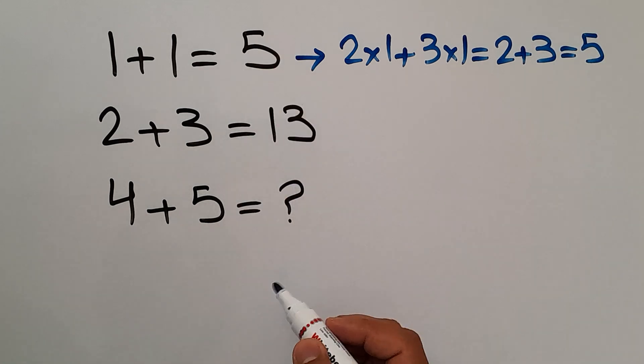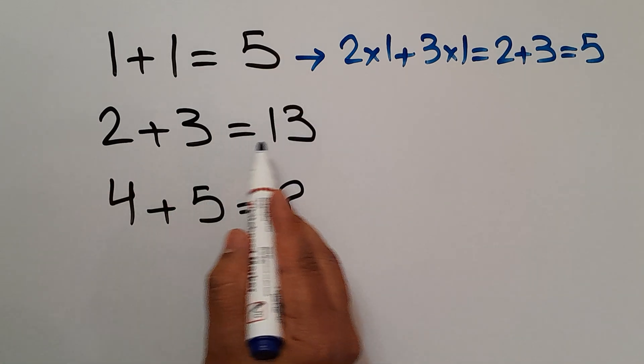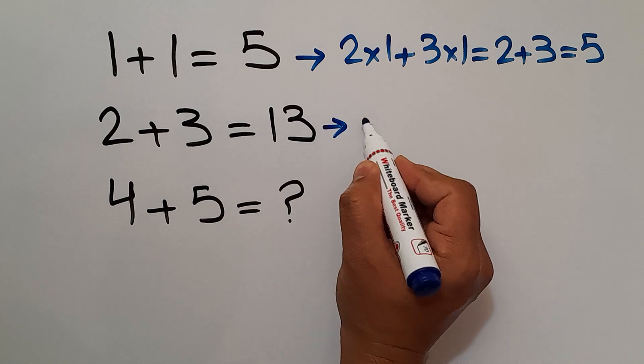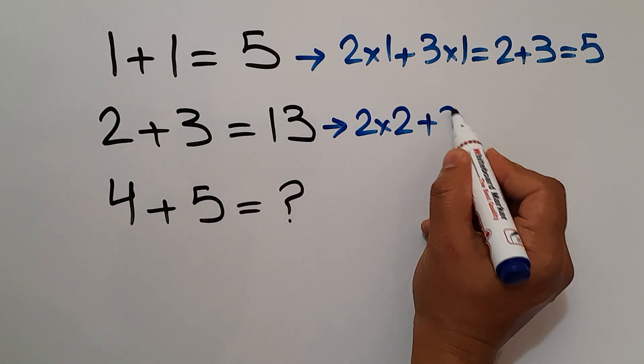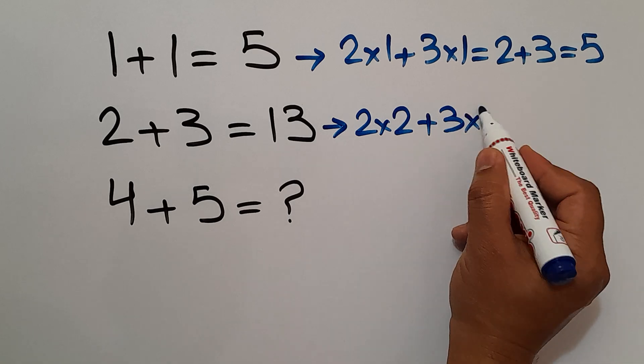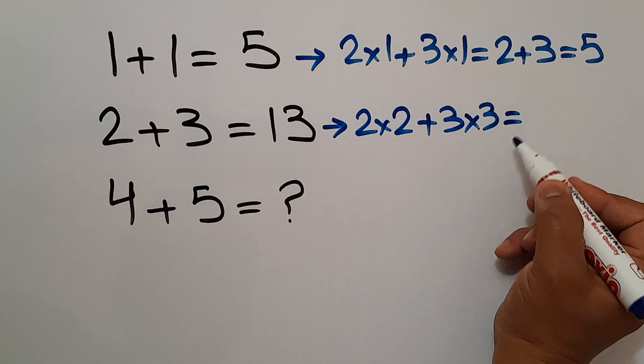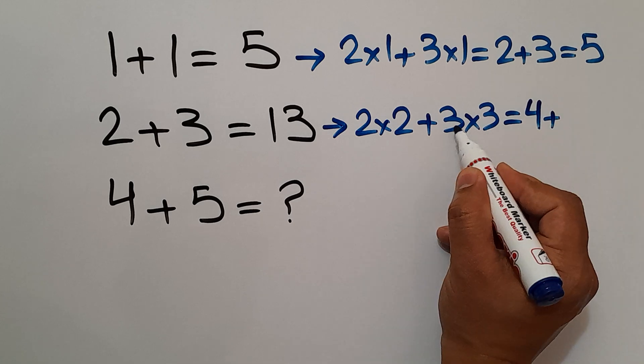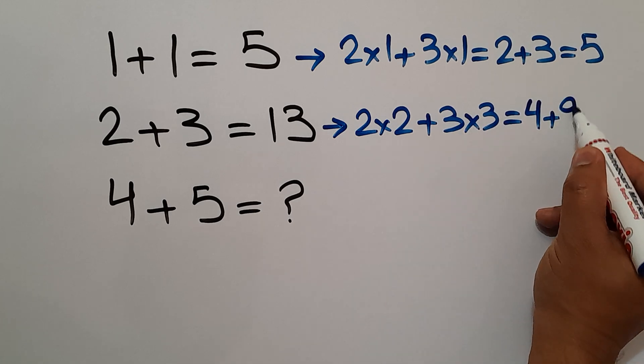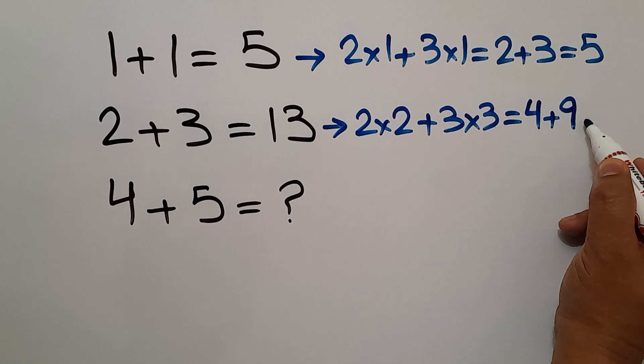And in the second equation, 2 times 2 plus 3 times 3 equals—2 times 2 equals 4 and 3 times 3 is 9—4 plus 9 gives us 13, the right hand side.